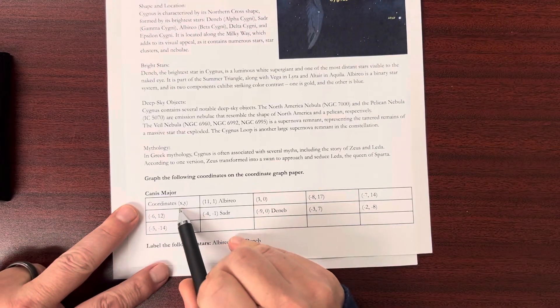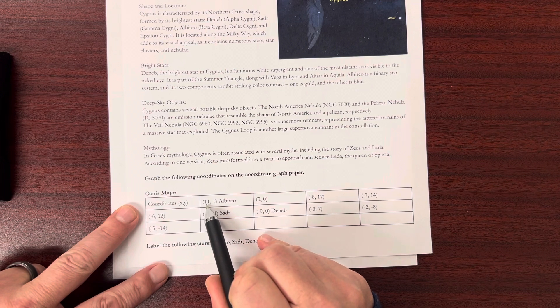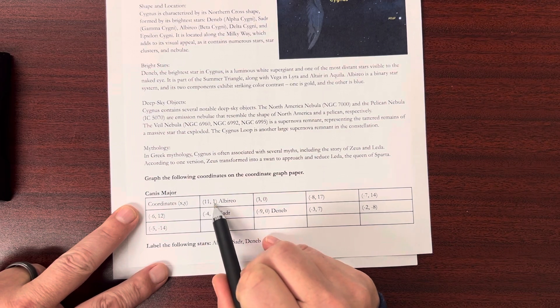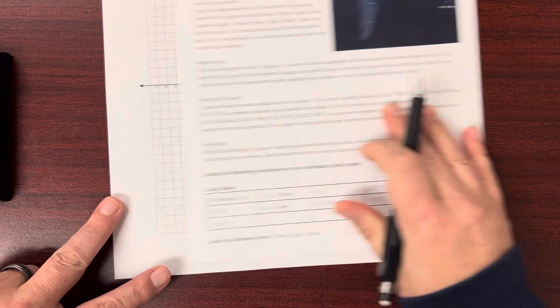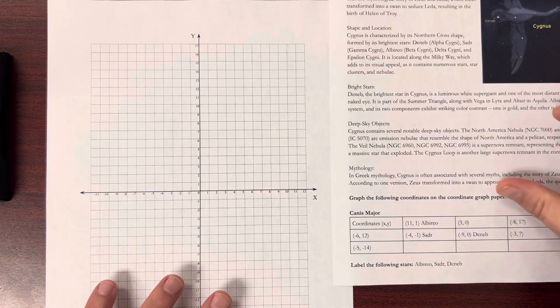So remember, with coordinates, we have x and y coordinates. So for this first star, 11 is the x, y is the 1. And we're just going to graph a few of these stars on here to remind you.